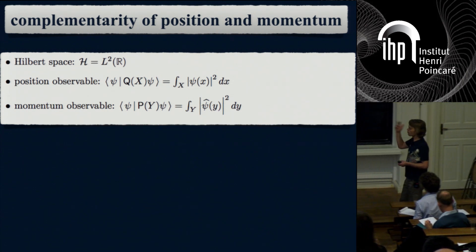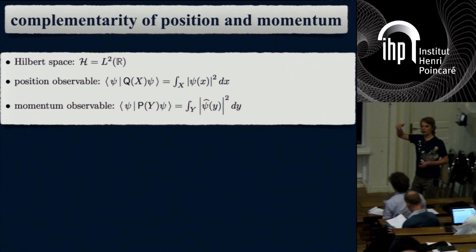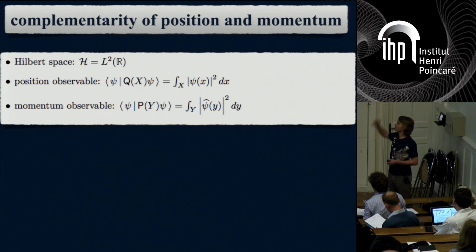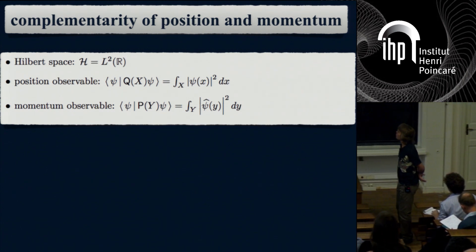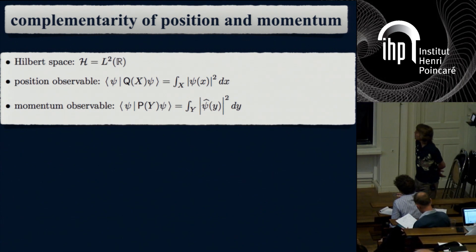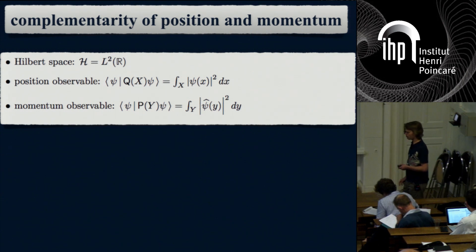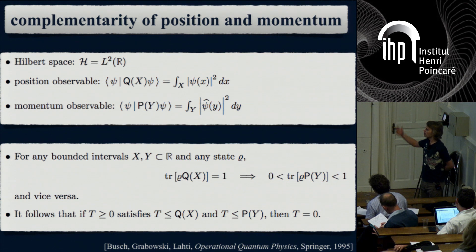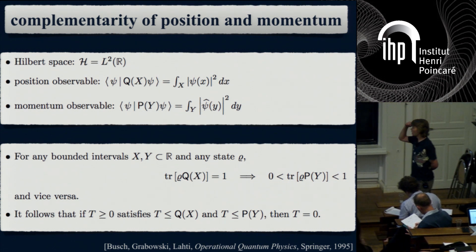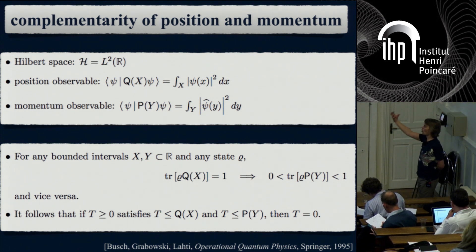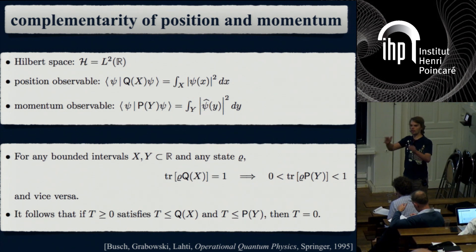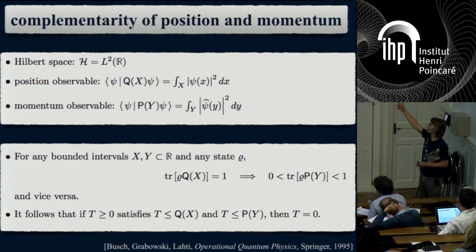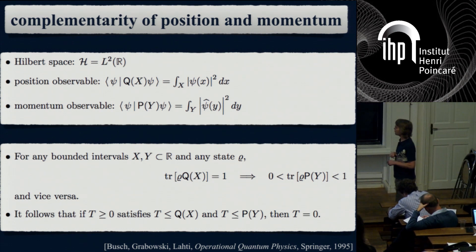Position, as an operator-valued measure, is a set function: for any Borel subset it gives a positive operator. Momentum is defined by the same formula but with a Fourier transform. Complementarity—found in many textbooks—can be stated as: if I can localize a particle in a bounded interval X (probability of finding it there is 1), then I cannot say anything definite about momentum; for any bounded interval the probability can be neither 0 nor 1, and vice versa. Conveniently, this means any positive operator below Q_X · P_Y for bounded intervals must be zero.